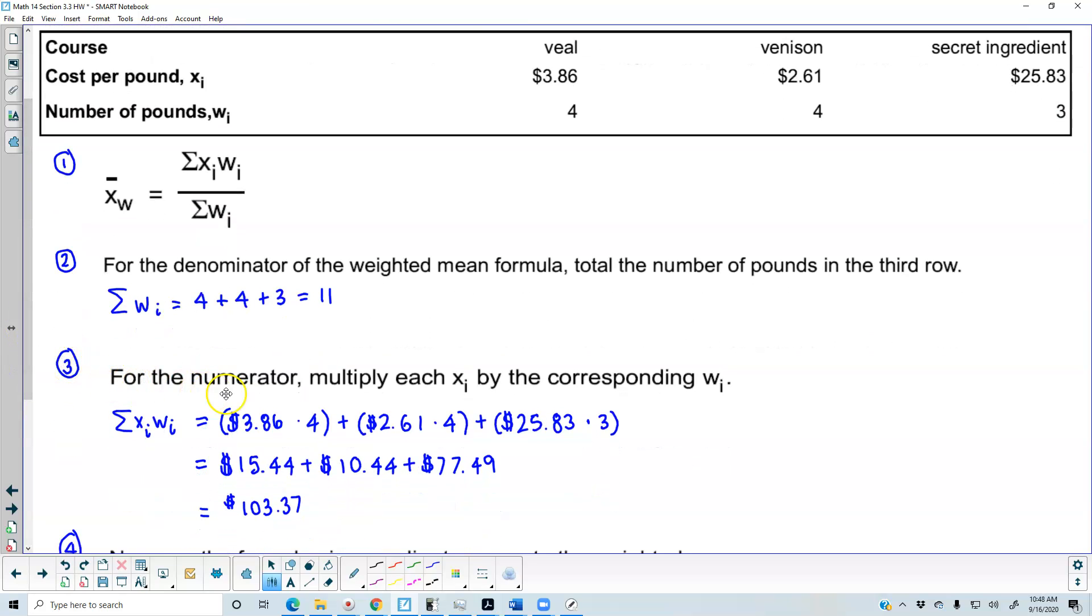Step two: for the numerator, multiply each x_i by the corresponding w_i. So $3.86 times 4 equals $15.44, $2.61 times 4 equals $10.44, and $25.83 times 3 equals $77.49.